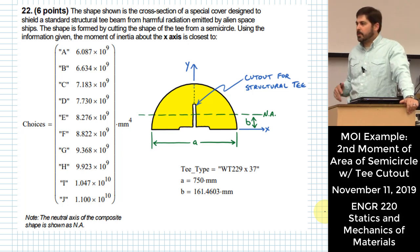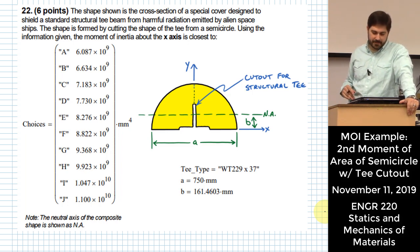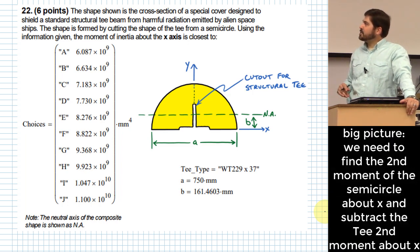Alright, for this problem we have a special shield to block our T-shaped beam from radiation from alien spaceships. The shape is formed by cutting the shape of a T from a semicircle. Using the information given, the moment of inertia about the x-axis is closest to what?